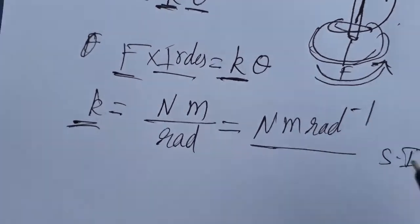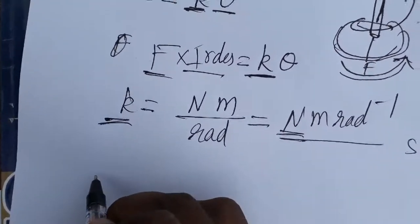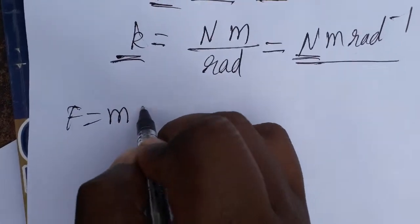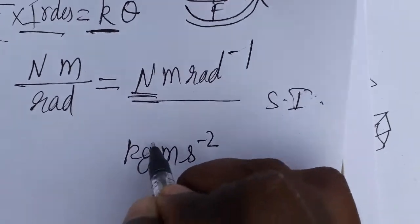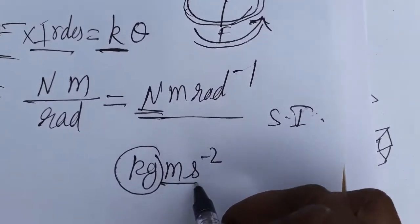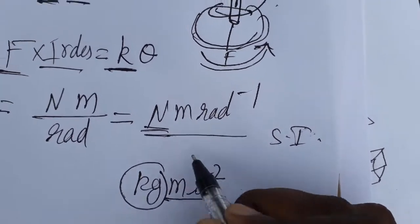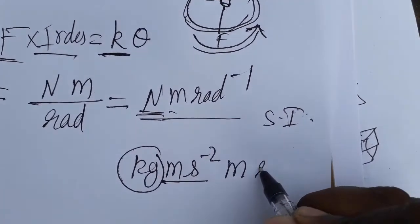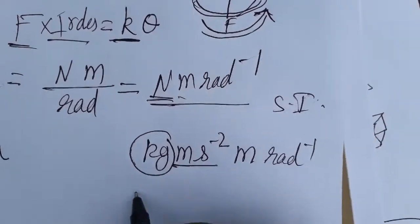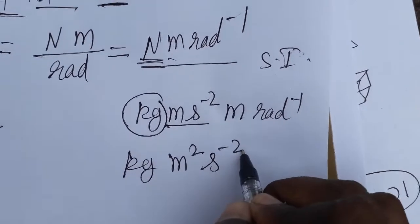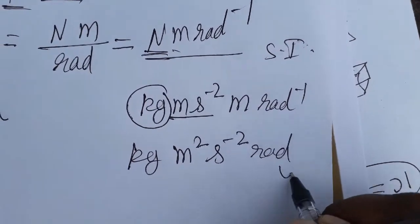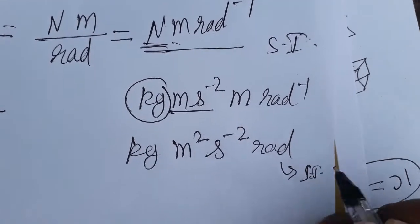We got SI unit, what is the dimensional formula? For Newton it is force, force equals MA, mass into acceleration. So KG meter second minus 2, KG is for mass, meter second minus 2 is for acceleration, and one more meter, then radian inverse. So KG meter square second minus 2 radian inverse. This is the final solution for SI unit and dimensional formula.